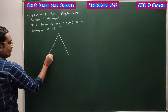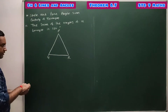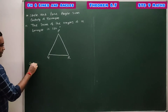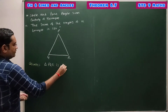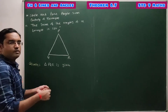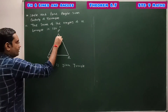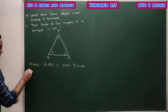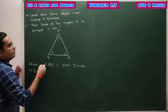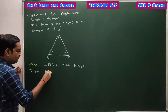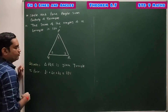Given: triangle PQR is given. Label the angles: angle 1, angle 2, and angle 3. To prove: angle 1 + angle 2 + angle 3 = 180 degrees. The first method used construction by drawing one line. In this second method, we use the definition of the exterior angle of a triangle.